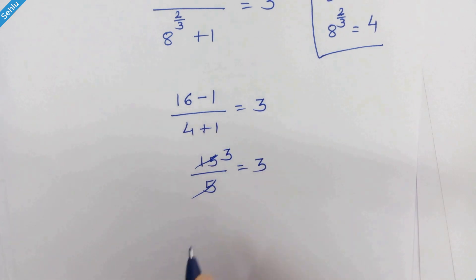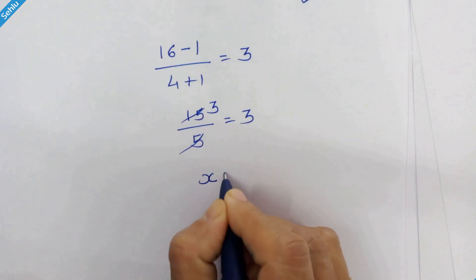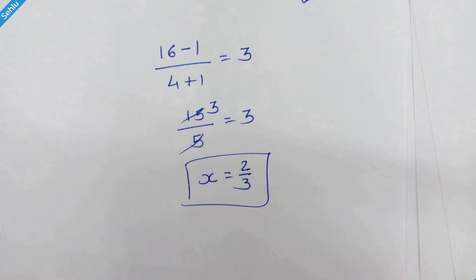5 3s are 15. So x is equal to 2 upon 3 is the correct answer. Thanks for watching. Please subscribe. We will meet in the next one. Bye bye. Take care.